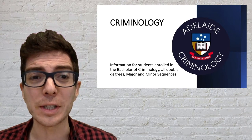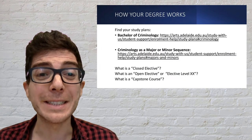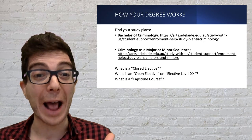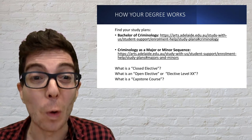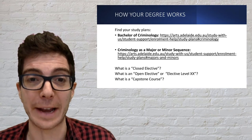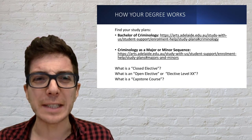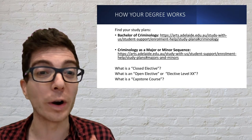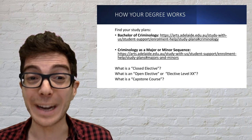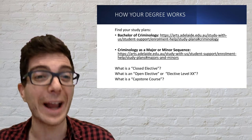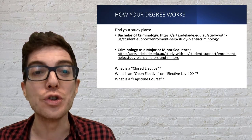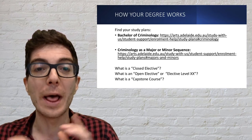So let's talk first about what it is you are going to study. I'm going to give you a rundown of how your degree works and how you can find more information about what you should be enrolling in as you progress through your studies here at Adelaide. The first thing you need to do, regardless of what degree program you are enrolled in, is to get your hands on a copy of your study plan. Whether you are enrolled in a Bachelor of Criminology, a major, or a minor, you'll be able to access and download a study plan which will tell you exactly what you need to be enrolling in from one semester to the next.